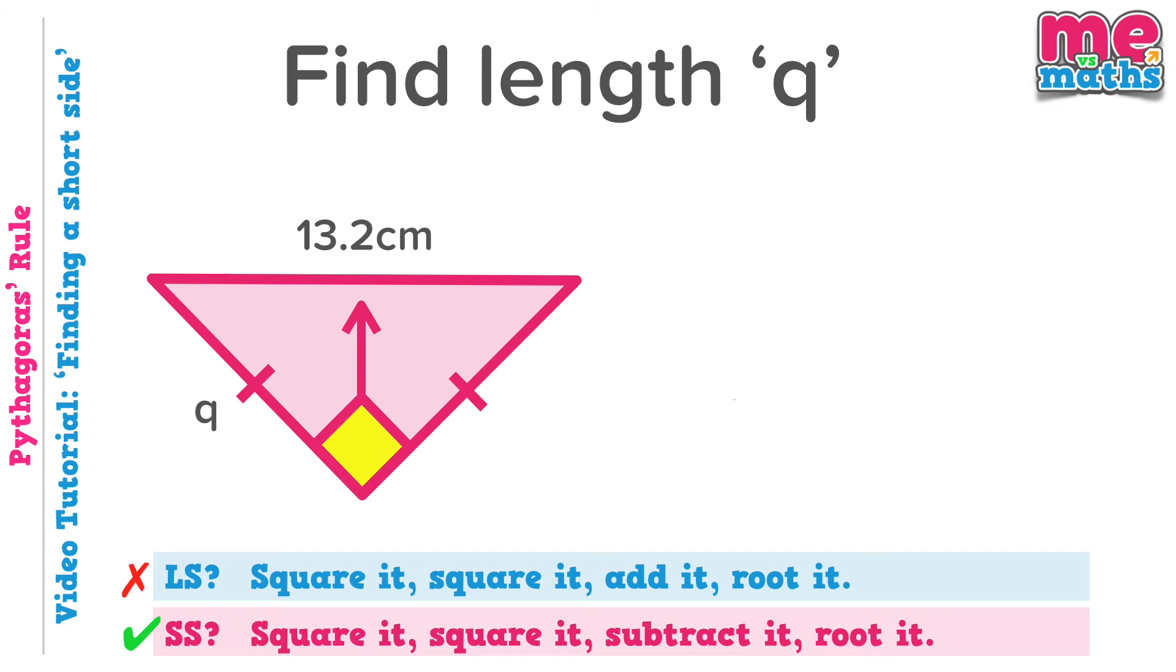Right, we're going to have to answer this question in a different way. Let's start by squaring the 13.2 that we were given. Remember what that is according to Pythagoras rule. That's the sum of the squares of these two short sides. Now we know that the two short sides are actually the same length because of these bars on them. So we're going to half our 174.24.